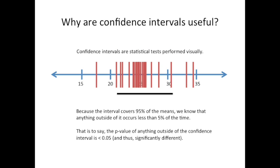Now that we know what confidence intervals are, we might ask: why are they useful? I think confidence intervals are useful because they are statistical tests performed visually. Because the interval covers 95% of the means, we know that anything outside of it occurs less than 5% of the time. That is to say, the p-value of anything outside of the confidence interval is less than 0.05 and thus significantly different.